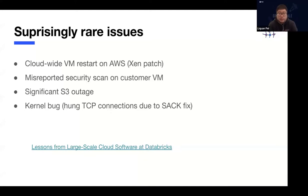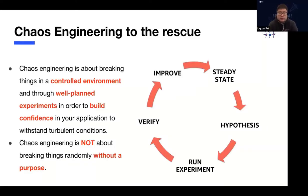Because those things are rarely seen, it's hard to ensure that the code paths handling those issues are even there, or are handled correctly. So that's why we need probably another methodology to ensure the systems, especially distributed systems, are behaving correctly in case of those failures. So that's why Chaos Engineering is invented to rescue. Chaos Engineering is about breaking things in a controlled environment through a well-planned experiment. The goal is to build confidence in your application to withstand turbulent conditions, to ensure the application is behaving correctly under failures. It's not about breaking things without a purpose.